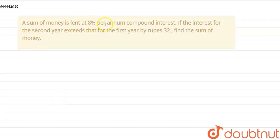A sum of money is lent at 8% per annum compound interest. If the interest for the second year exceeds that for the first year by rupees 32, find the sum of money.